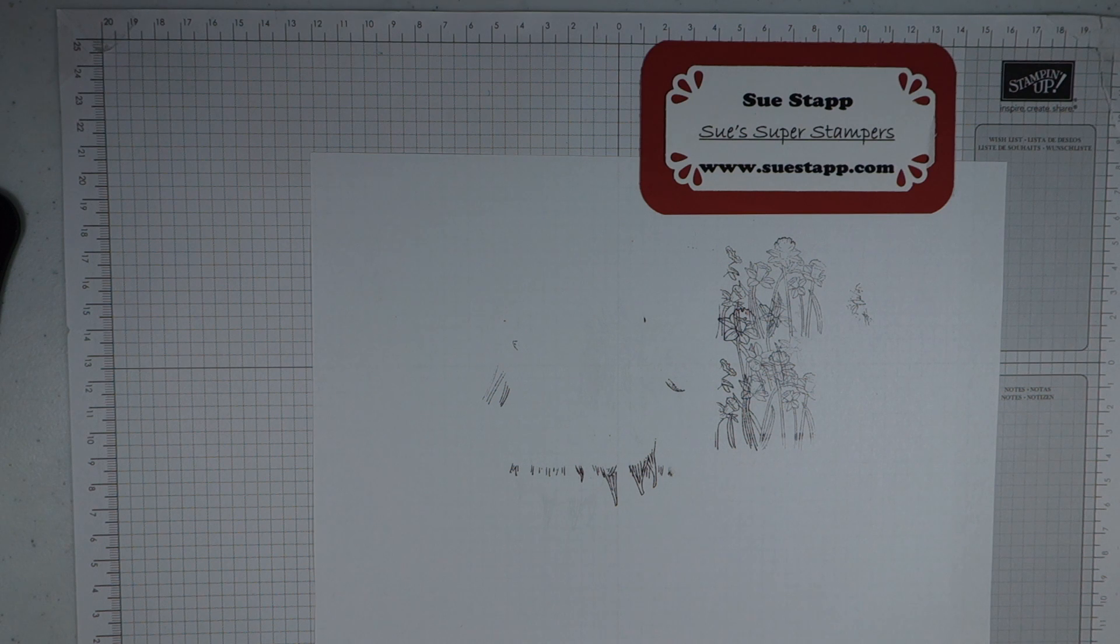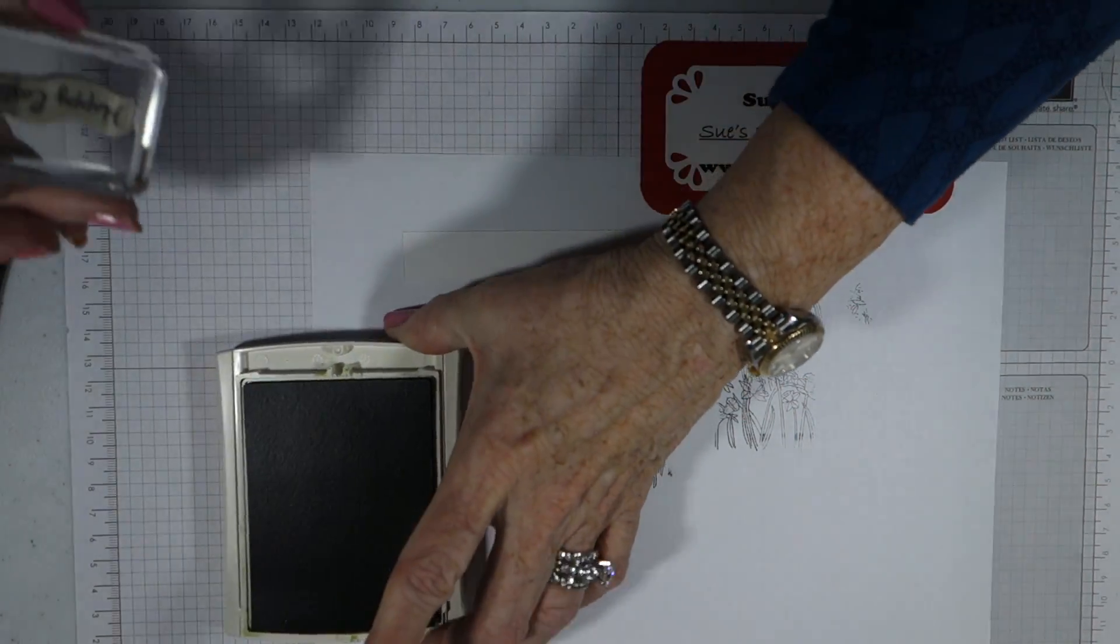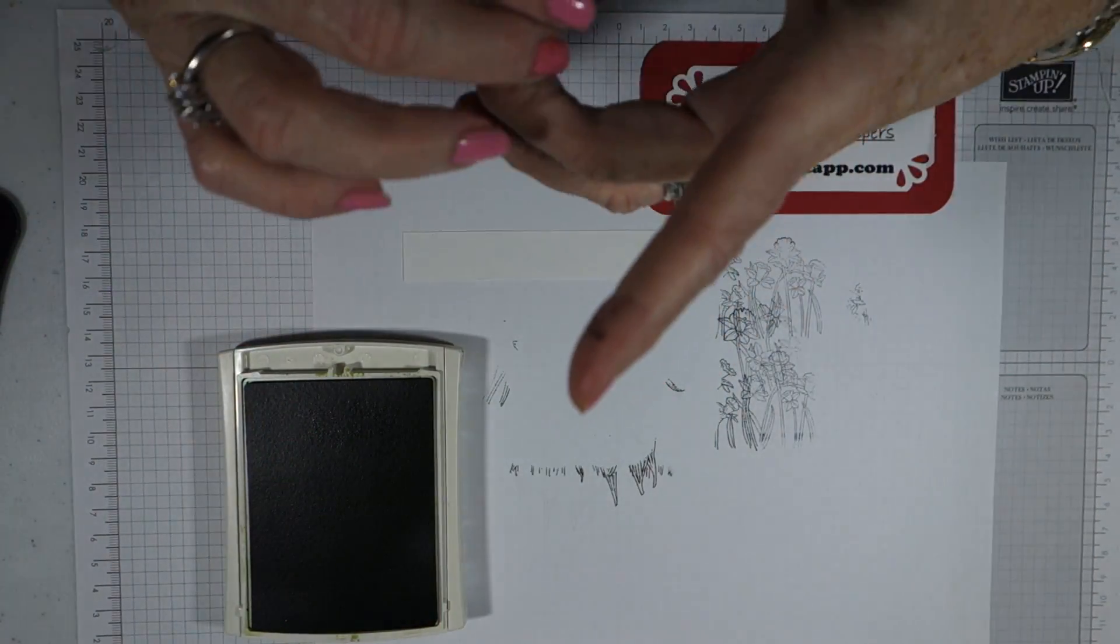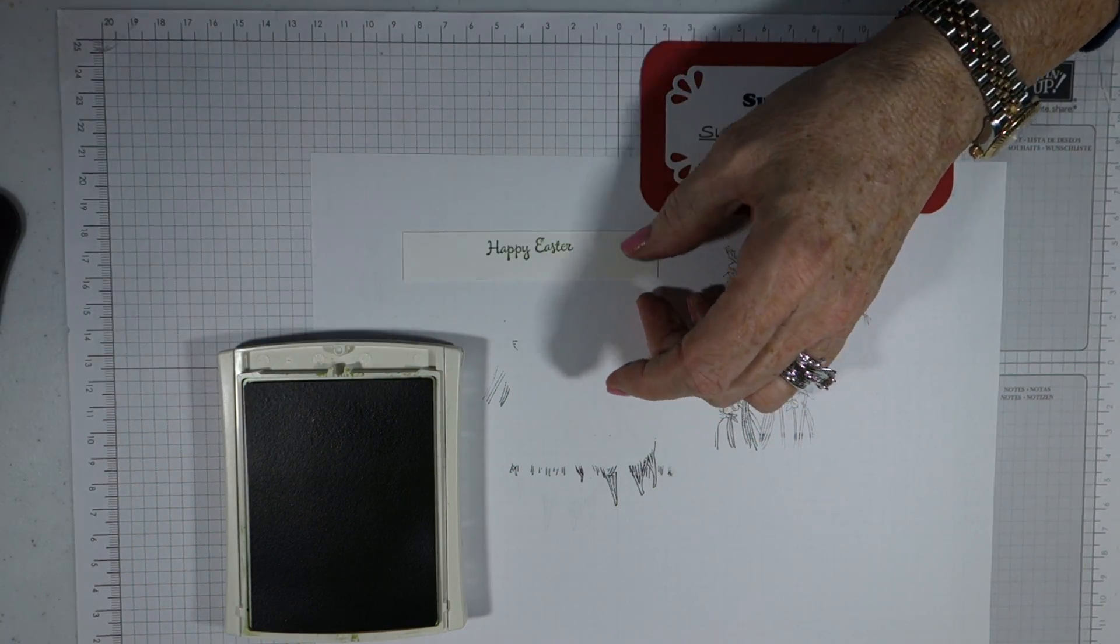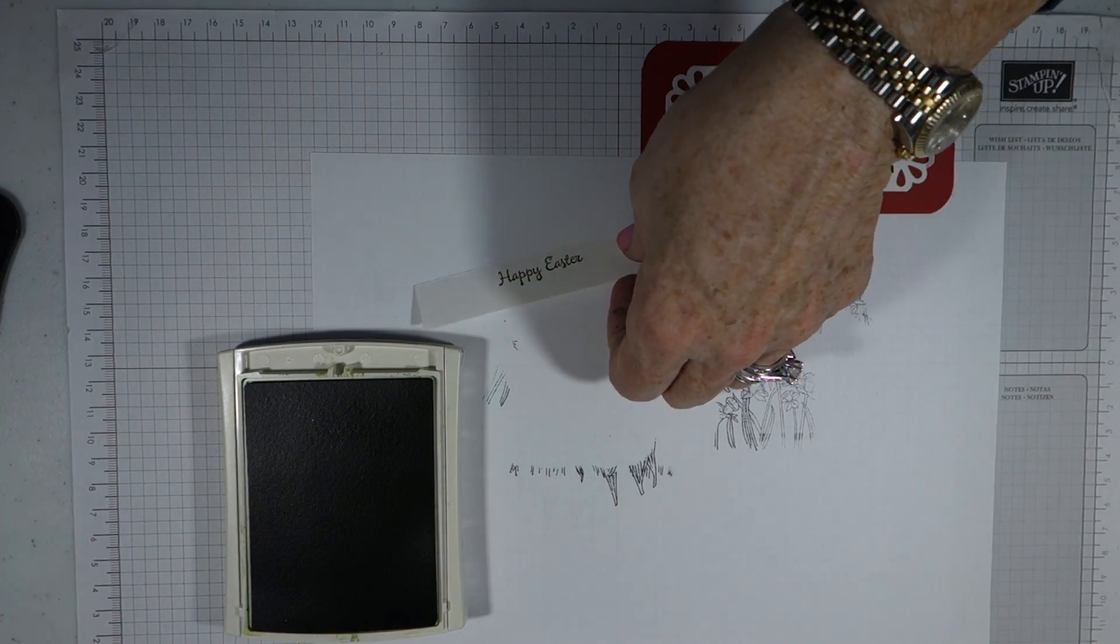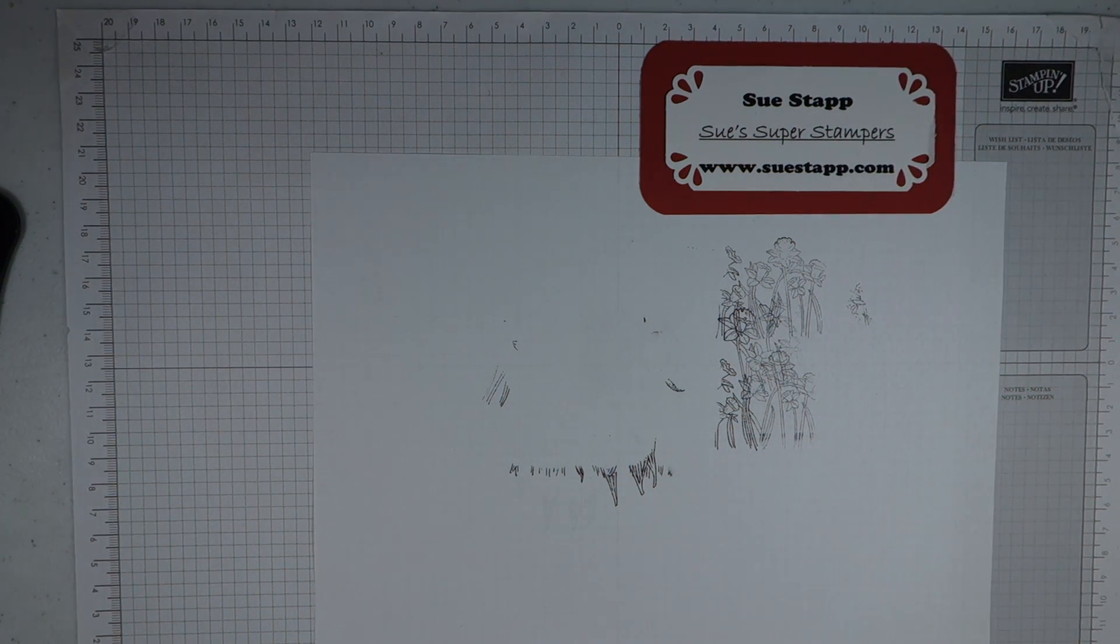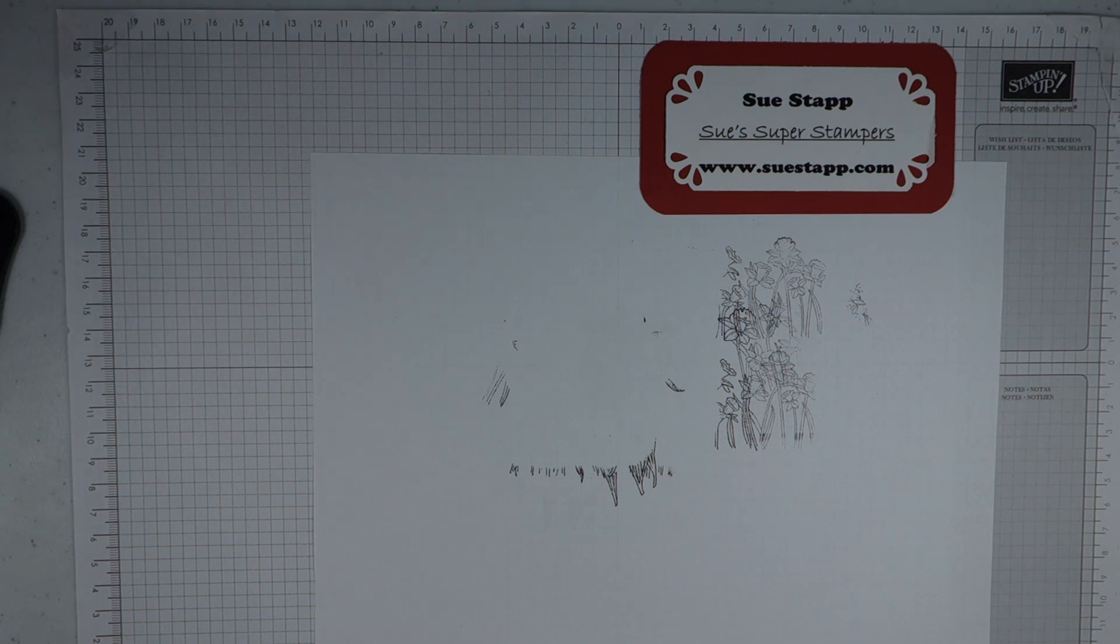We have one other thing that we're going to stamp, and that is our little sentiment that goes at the bottom. Now I'm using Old Olive for that. I've opened the stamp pad and I have tap, tap, tapped my Happy Easter sentiment. I'm going to center that and again use the same five-second rule. And it's that nice, deep Old Olive color.